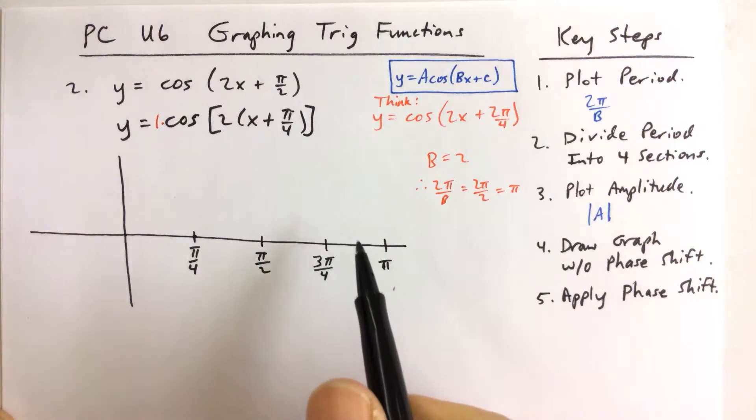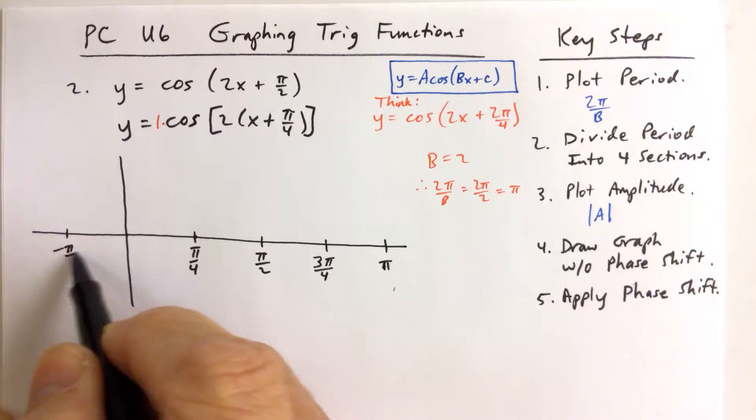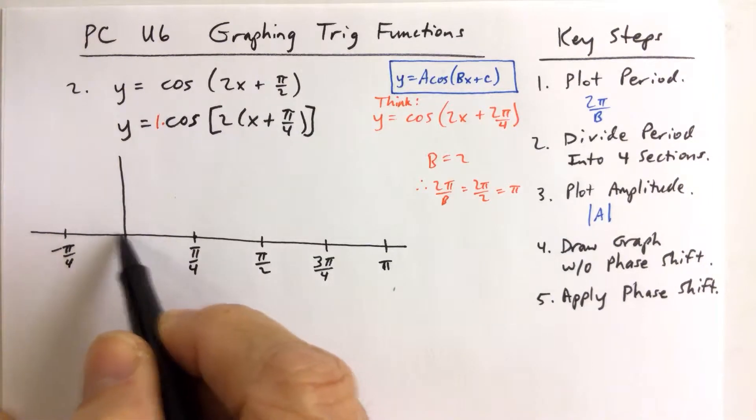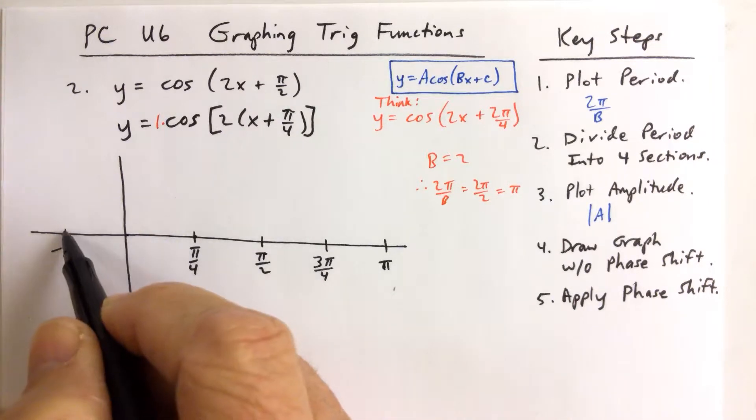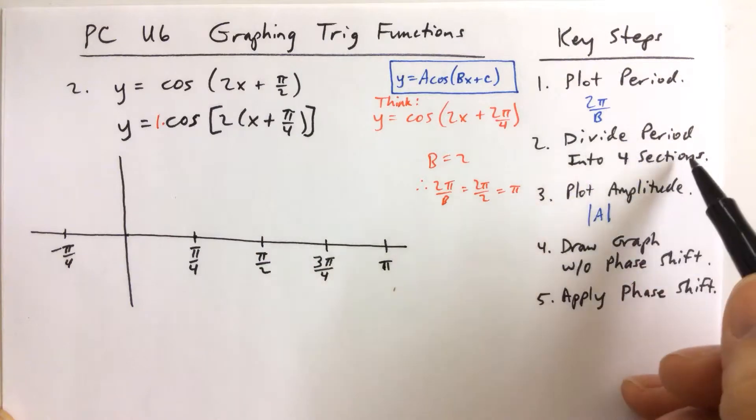I know I'm going to shift to the left pi over 4 radians, so I could even label this one here as negative pi over 4. So from zero to the first tick mark to the left is negative pi over 4. So that's the dividing the period into four sections.